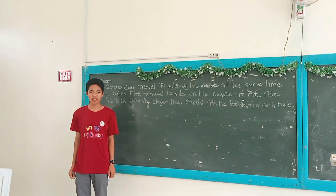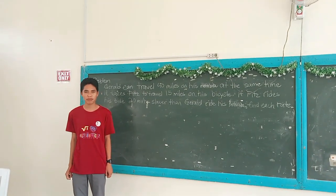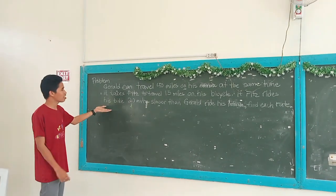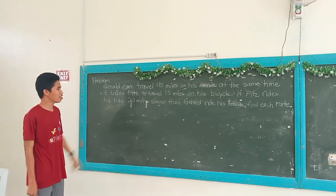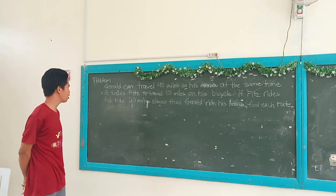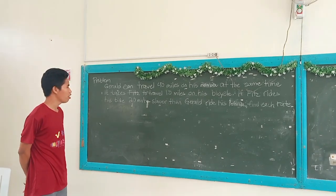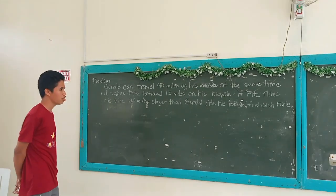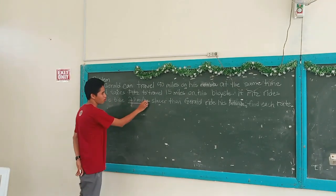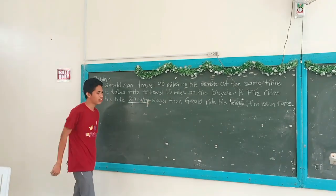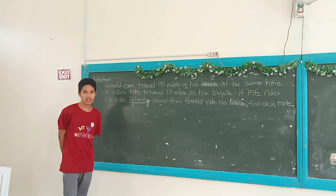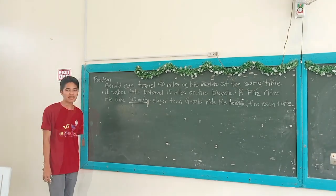We are solving a problem involving a rational algebraic equation. Our problem is: Gerard can travel 40 miles on his motorbike in the same time it takes a freight rider to travel 15 miles on his bicycle. The freight rider rides his bike 20 miles per hour slower than Gerard drives his motorbike.